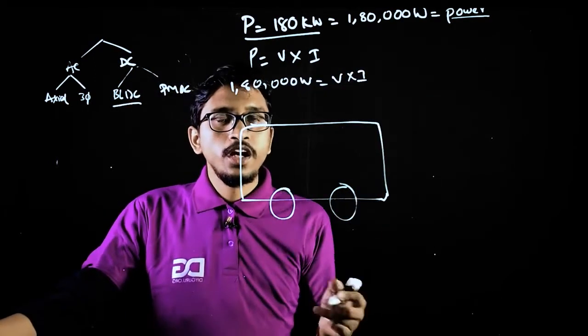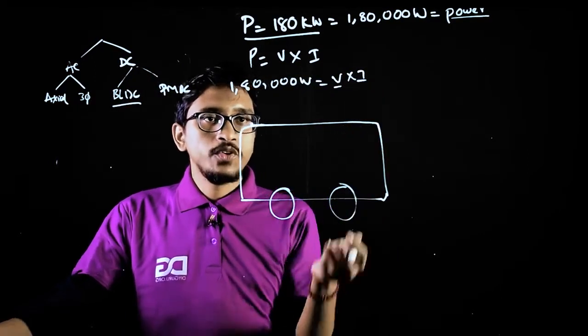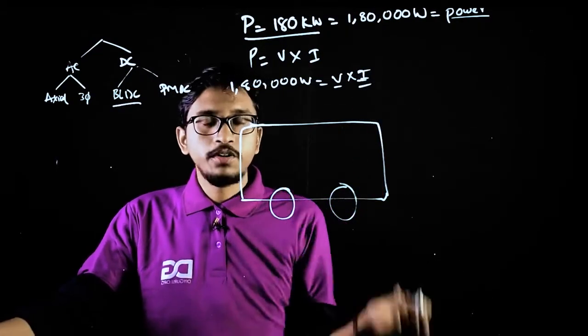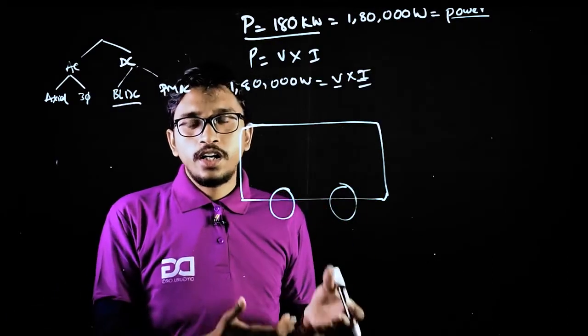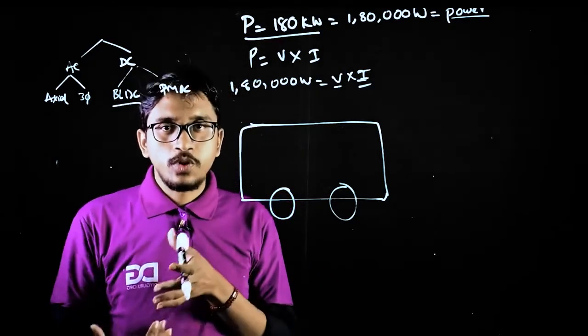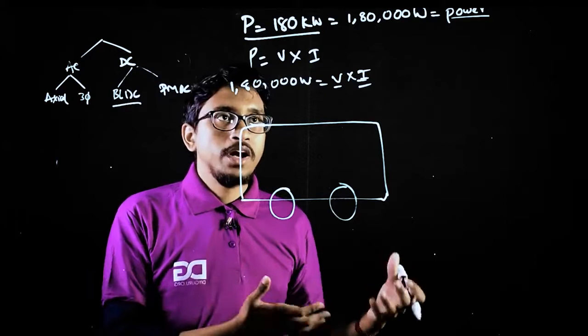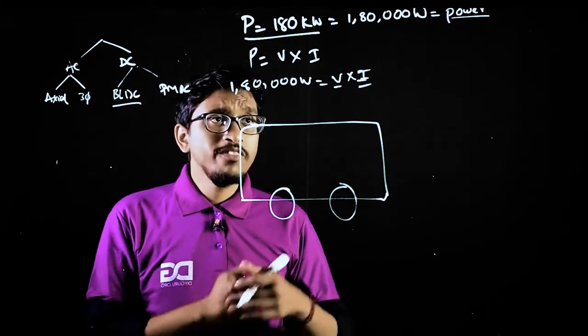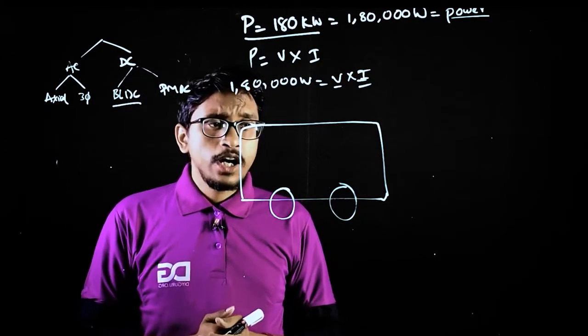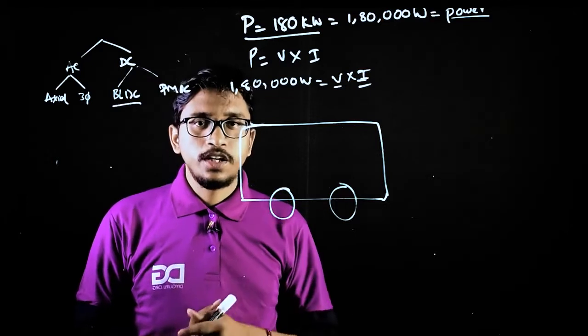Now just tell me at what voltage we have to get the batteries and what current we need to get from the batteries or what current that motor draws. We cannot say what is the type of motor and what is the type of battery we need. So when we actually go to the higher powers, you must again go to the design part.